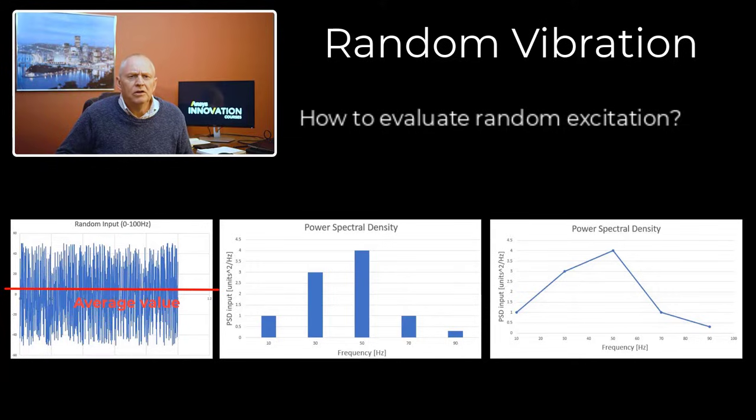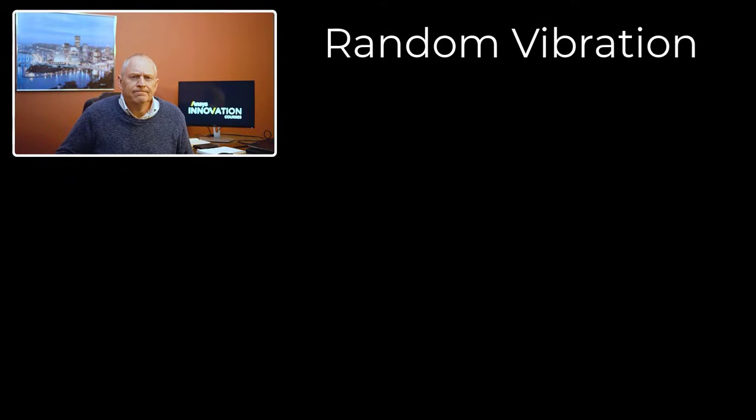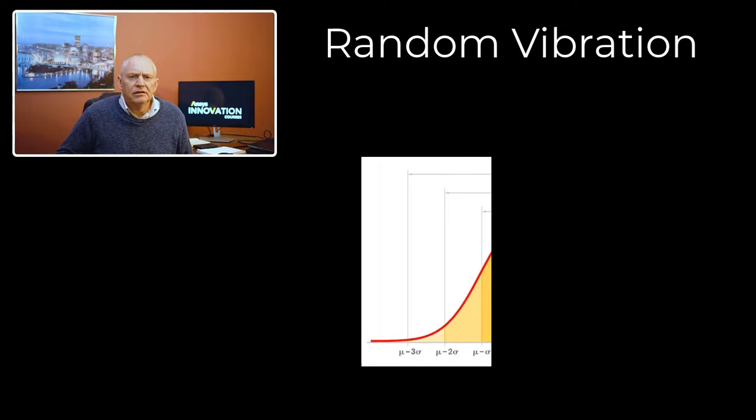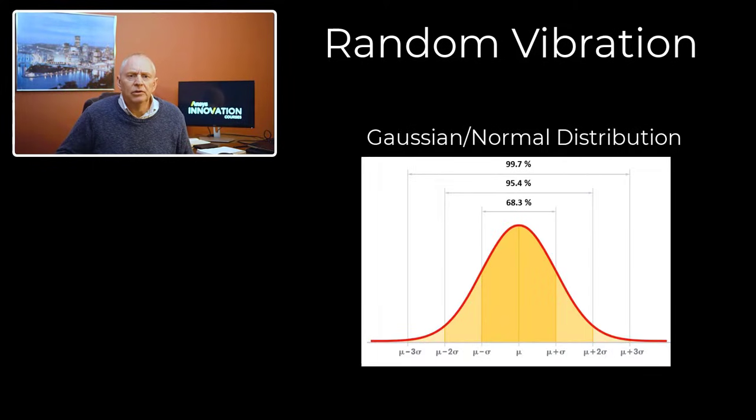PSD spectra plots are generally supplied to the analyst. Many random processes follow a Gaussian distribution, also referred to as normal distribution. The excitation is assumed to follow a Gaussian distribution. The 1 sigma value represents occurrence 68.3% of the time, while 3 sigma values represent occurrence 99.7% of the time.